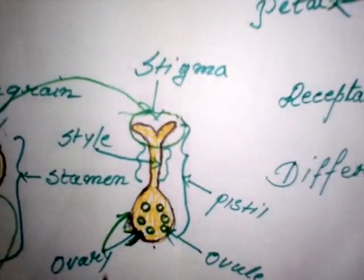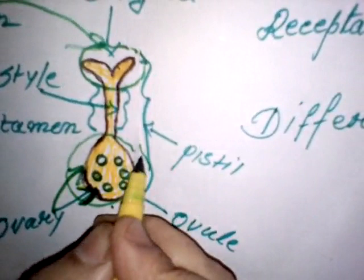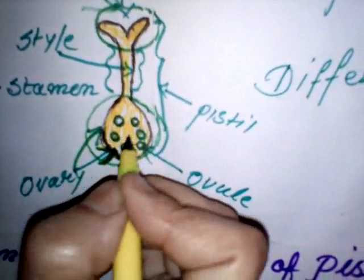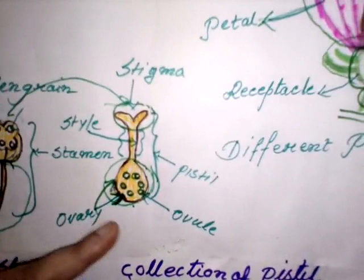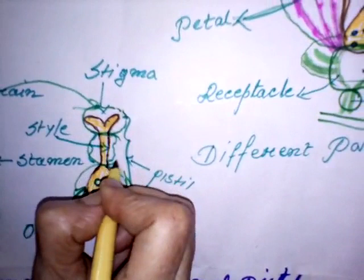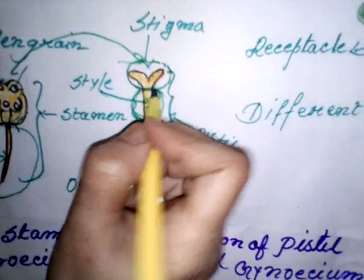The bottom swollen part of pistil is known as ovary. Ovary contains a large number of ovules. I have represented ovules with the help of smaller circles. Each ovule bears one female gamete that also takes part in reproduction. The middle part of pistil is known as style. It connects stigma with ovary.